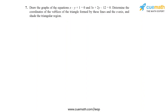Question 7 says: draw the graphs of the equations x minus y plus 1 equal to 0 and 3x plus 2y minus 12 equal to 0. Determine the coordinates of the vertices of the triangle formed by these lines and the x-axis, and shade the triangular region. So let's draw the graph of these two equations.